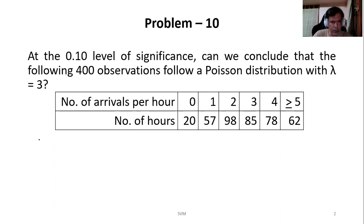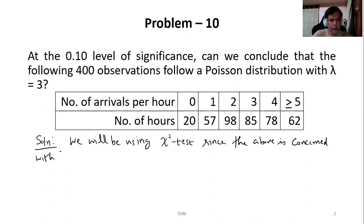Let me write it as a solution. We will be using chi-square test since the above is concerned with goodness of fit test. Once we decided that this is the test we are going to use, next step is to freeze on the hypothesis.